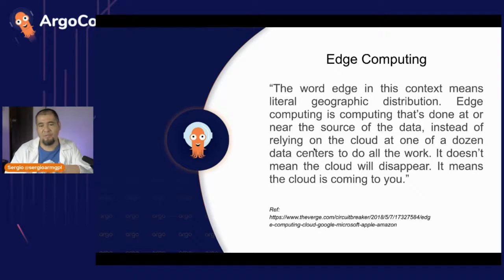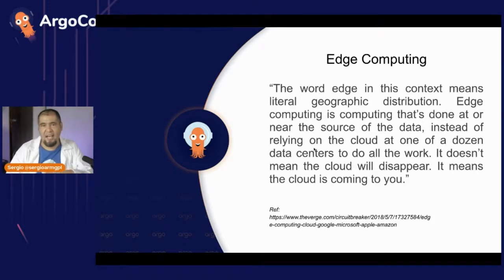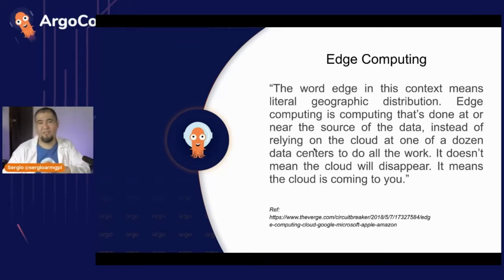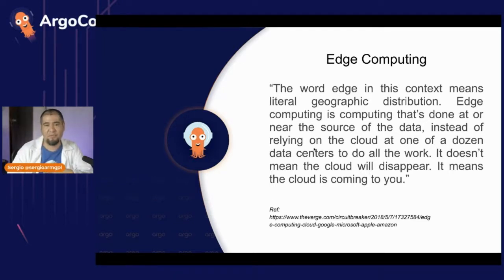For example, you can process information in your smartphone, or some device that is close to you — like a small computer. Today we are going to see how to deploy this kind of environment using Raspberry Pi. The point of edge computing is to process things close to the data location in order to reduce the latency of moving data from your local side to the cloud.